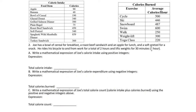For number two, Joe has a bowl of cereal for breakfast, a roast beef sandwich and an apple for lunch, and a soft pretzel for a snack. He rides his bicycle to and from work for a total of two hours and lifts weights for 30 minutes — one half hour.